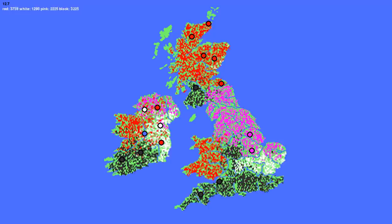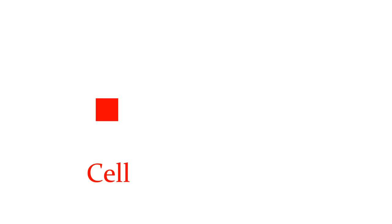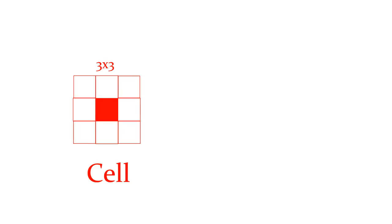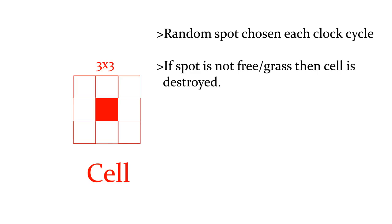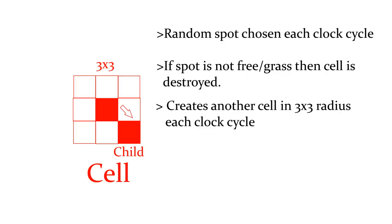Each faction is made up of cells. A cell is a square which will move each clock cycle to a random space in a 3x3 radius. If the spot chosen is not green — the colour of the grass — then the cell will be destroyed. It will also spawn another cell in a random spot in a 3x3 radius on each clock cycle, which will follow the same rules as the parent.